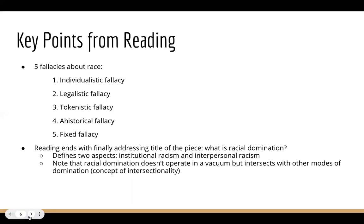This brings us to the final fallacy — the fixed fallacy. This is for those who assume racism is fixed, that it can never really be addressed and is immutable. They think that if the worst examples of racism have been addressed, then racism doesn't change or shift. If you define racism only as things like lynchings or segregated lunch counters, you'll say racism is no longer an issue — because now it is more symbolic, more subtle, or looks more like microaggressions. That is the fixed fallacy.